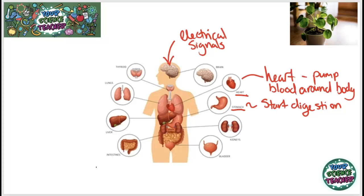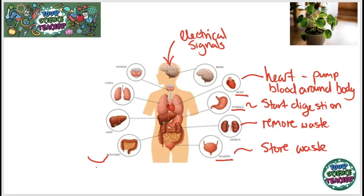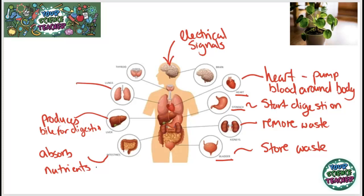The kidneys remove waste from your body — things like urea which we need to get rid of. The bladder stores that waste until you need to remove it. The intestines are where all the useful things from our food get absorbed into the bloodstream. The liver is a really important organ — it controls a lot of the chemical reactions in our body and produces a substance called bile which helps with digestion.